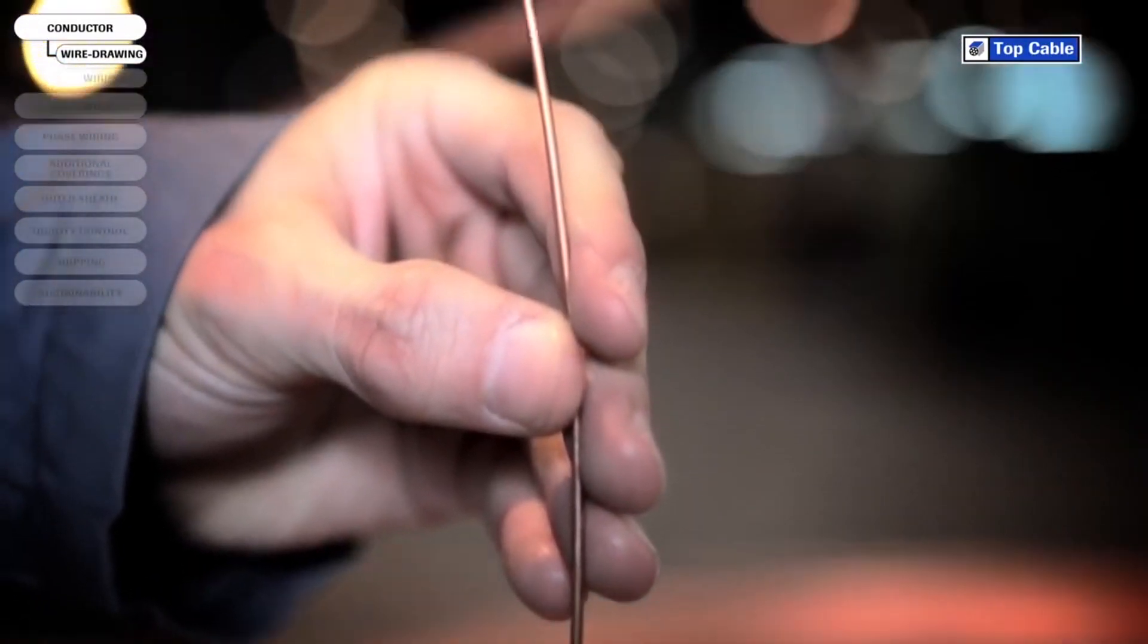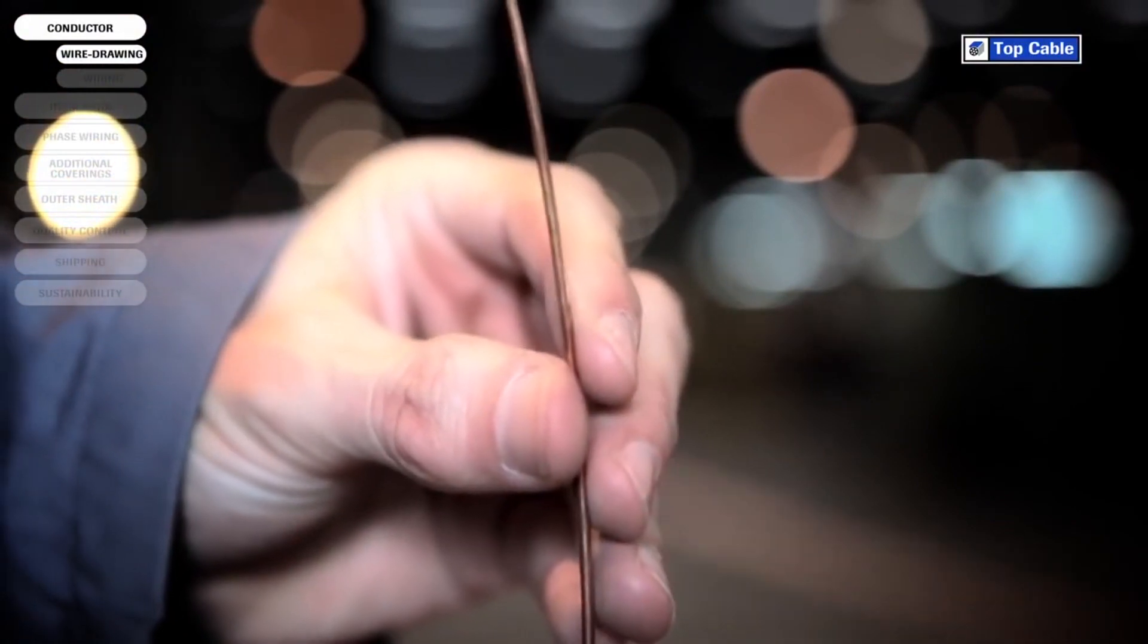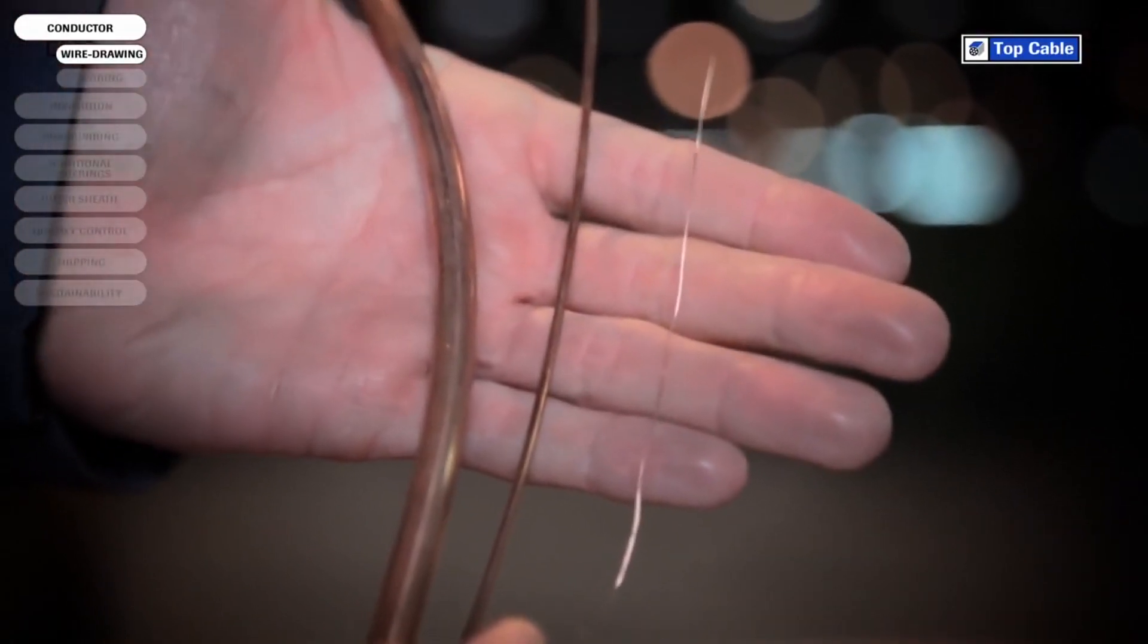This two millimeter wire is then drawn further, to reduce the diameter of the wire to the size needed for each kind of conductor.